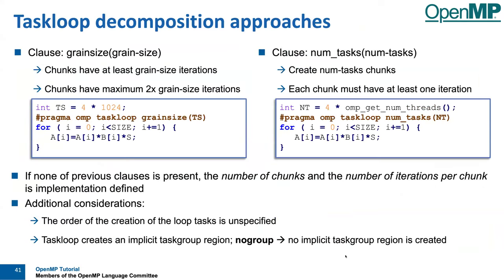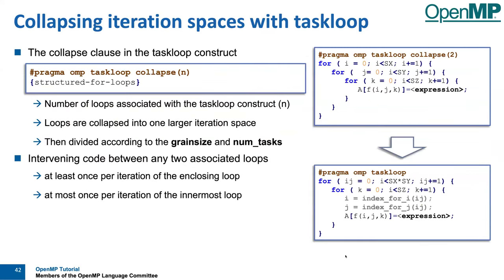There are two ways to specify how you want loop chunks to be cut. The first is grain_size, where you specify the minimum number of iterations per loop chunk. Alternatively, you can specify num_tasks — the number of tasks you want to create — and then the compiler picks a loop chunk size that fits that requirement. With collapse, you can take a loop nest and collapse multiple loops to get more iteration space to assign to loop chunks.